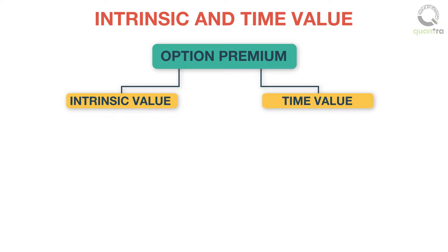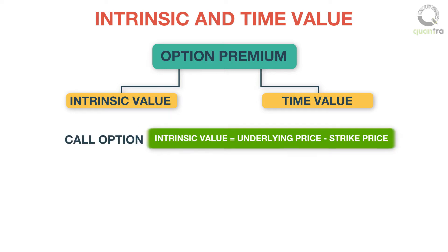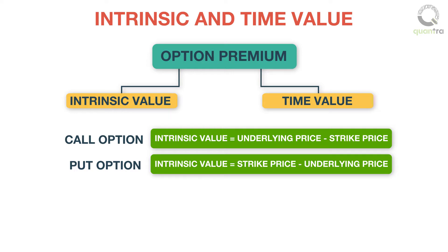The intrinsic value of the option is a function of its underlying price and the strike price. For a call option, the intrinsic value is equal to the underlying price minus the strike price. For a put option, the intrinsic value is the strike price minus the underlying price.